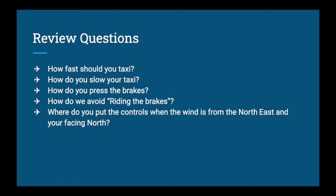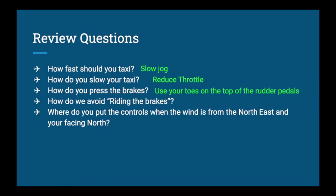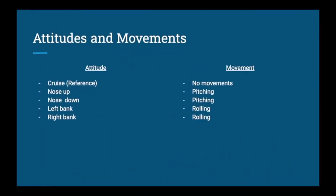Review questions: How fast should we taxi? A slow jog. How do we slow down? Reduce the throttle to idle. How do we press the brakes? Use your toes on the top of the rudder pedals; to avoid riding the brakes, keep heels on the floor with toes on the bottom of the pedal. Where do we put the controls if the wind is from the northeast and you're facing north? East is 90 degrees to your right, so wind is from about two o'clock — a right headwind. Turn into the wind: right yoke and neutral elevator.